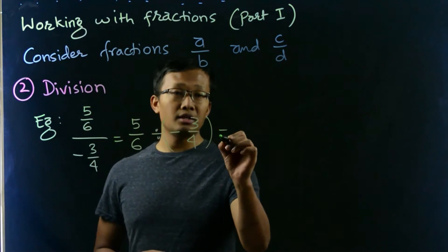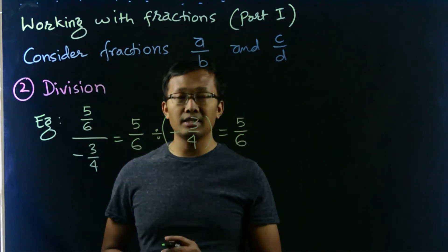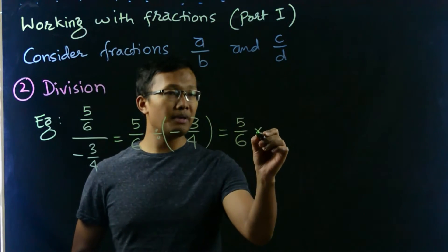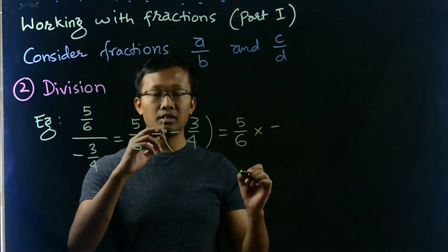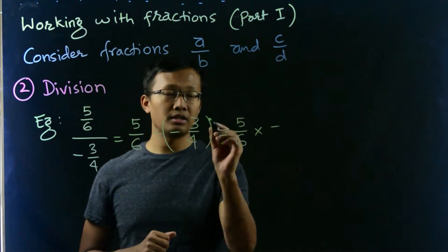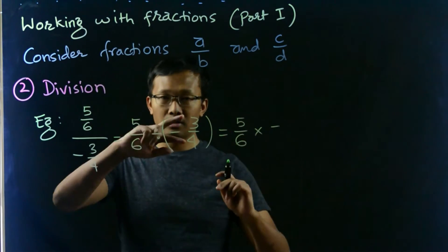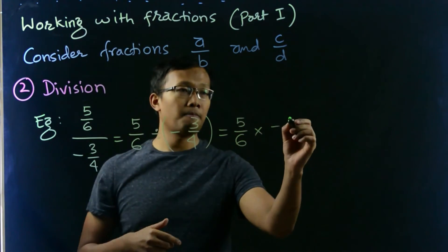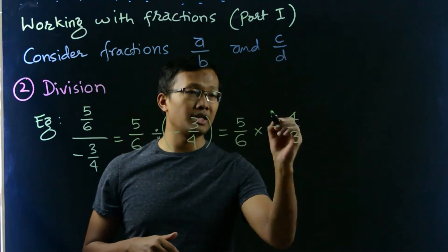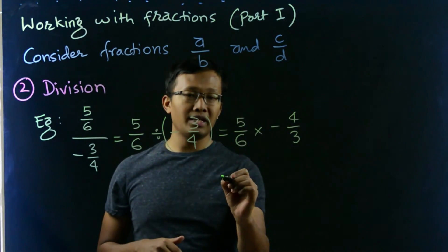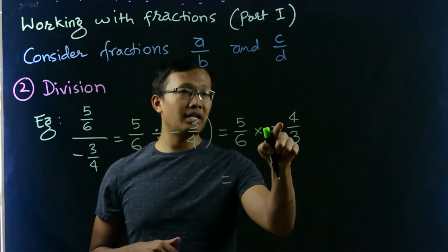We can write the first fraction as it is and multiply by the reciprocal of the second fraction. Take its reciprocal, flip it, so that's 4 over 3. Then we can simply multiply 5 and negative 4.